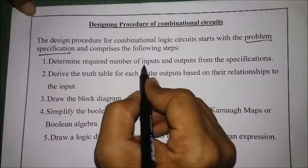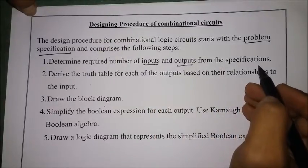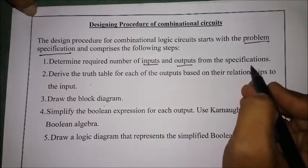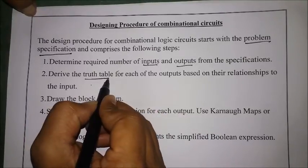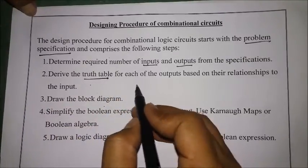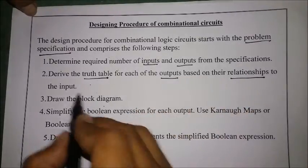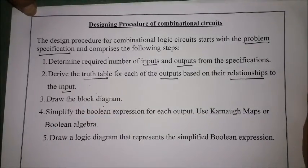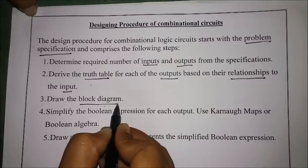The first step is to determine the required number of inputs and outputs from the given specifications. Next, we need to derive the truth table for each of the outputs based on their relationships to the inputs. After getting the truth table, we then draw the block diagram.